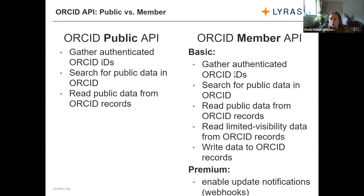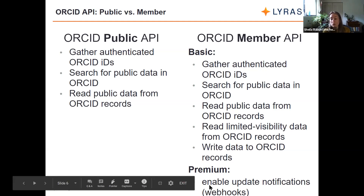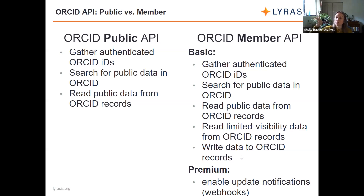Everyone who's part of the ORCID US community is also a premium member. An additional piece of functionality that you can enable with the ORCID API is something called webhooks, which basically allows your system to get a notification any time something on a researcher's ORCID record has changed. It'll send a notification to your system saying something on that ORCID record has changed, which can be a flag for you to pull in that new data.